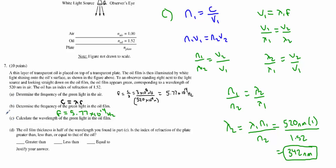A, B, and C are all set. Now part D says the oil film thickness is half of the wavelength you found in part C. Is the index of refraction of the plate greater than, less than, or equal to that of the oil?